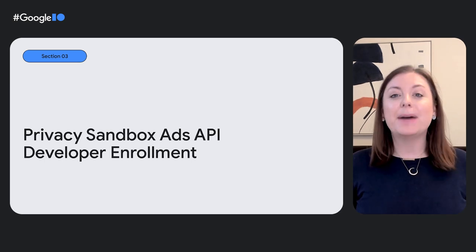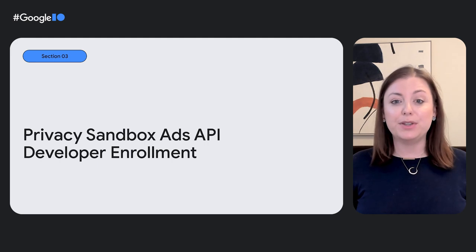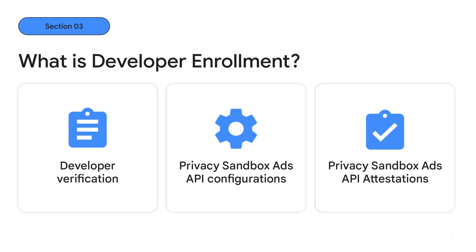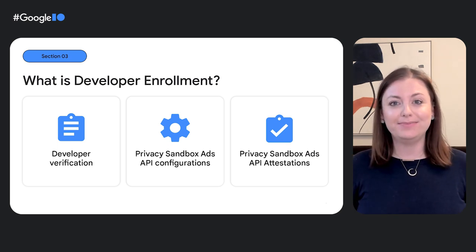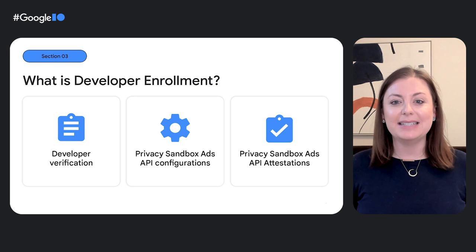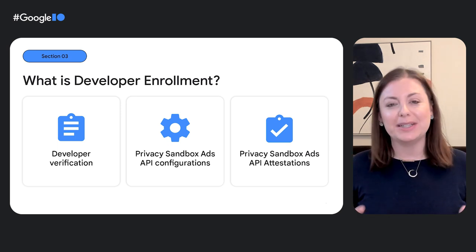Now that you know a little more about the Attribution Reporting API and the Privacy Sandbox, we would love for you to check it out for yourself. You can start by enrolling your company and setting up an origin trial, developer preview, or beta release in your development environment. Developer enrollment is a new process rolling out in June for the relevance and measurement Privacy Sandbox APIs across Chrome and Android. We want to make sure these technologies are used as intended and with transparency, and this process helps us do that by verifying the entities calling the APIs and gathering data needed to properly configure and utilize the APIs.